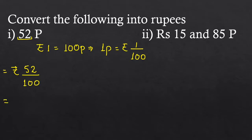Now we can convert 52 upon 100 into a decimal. You can see that there are 2 zeros in the denominator, so we will put 1 decimal after 2 digits — that is, after the 1's and 10's place. So it will be equal to 0.52. There are 2 zeros in the denominator, so there are 2 digits after the decimal.